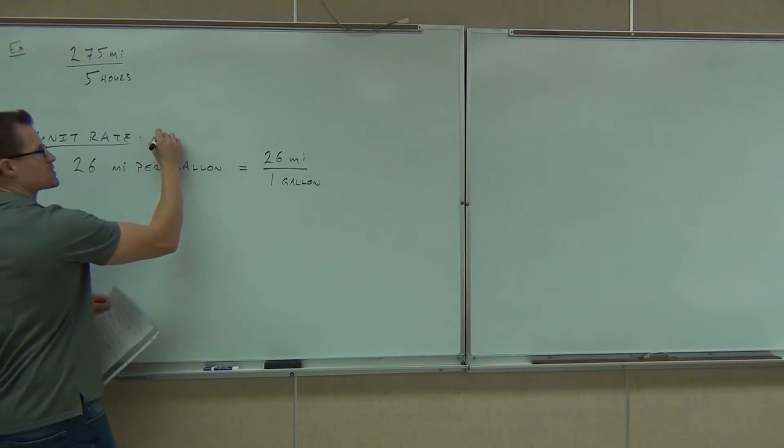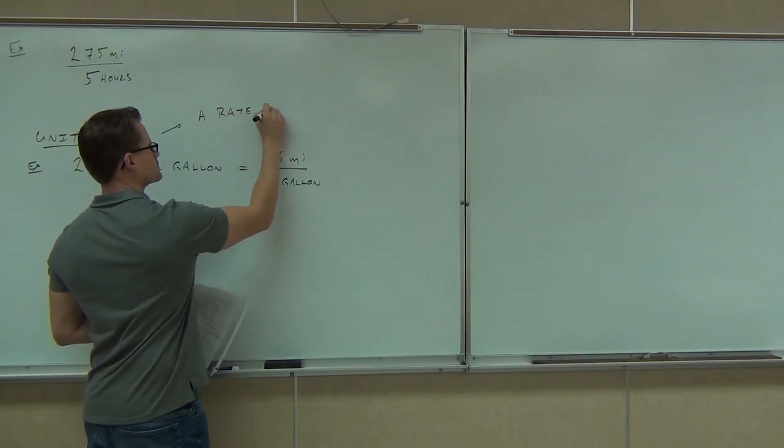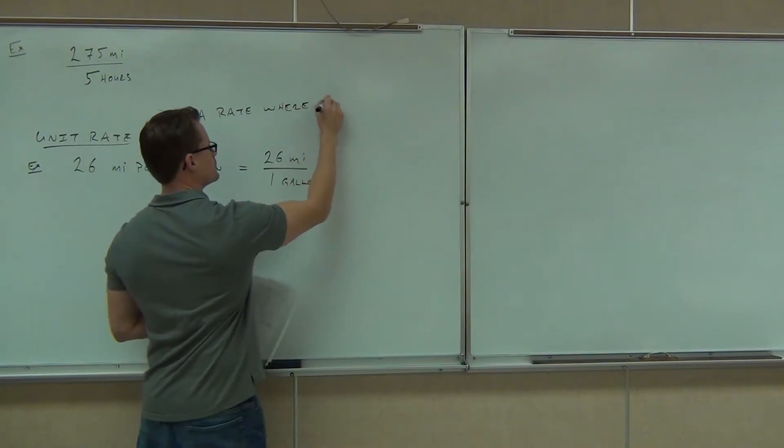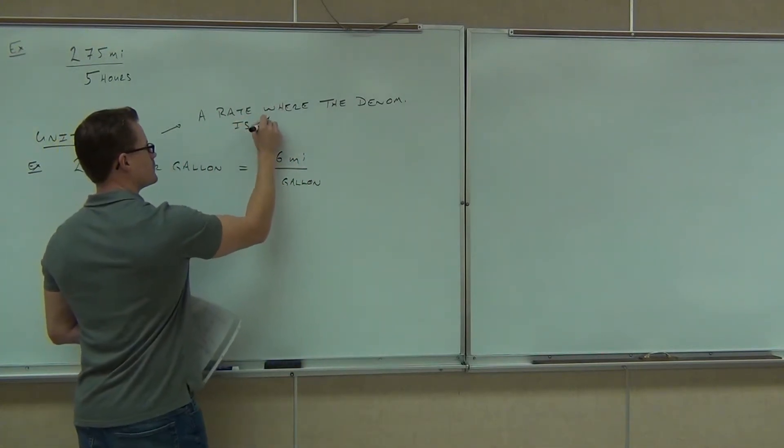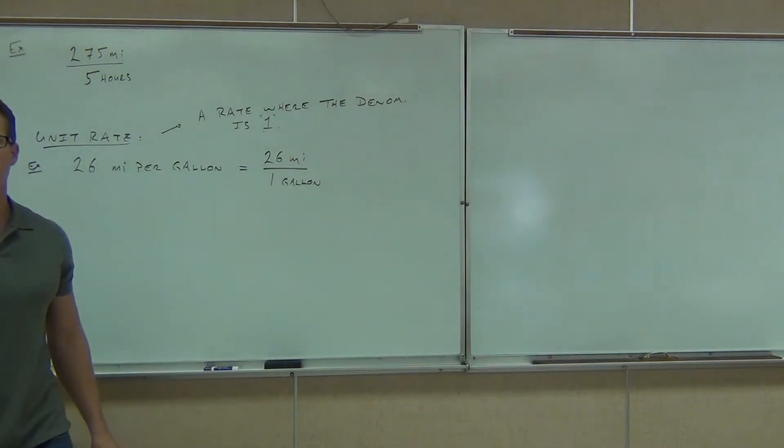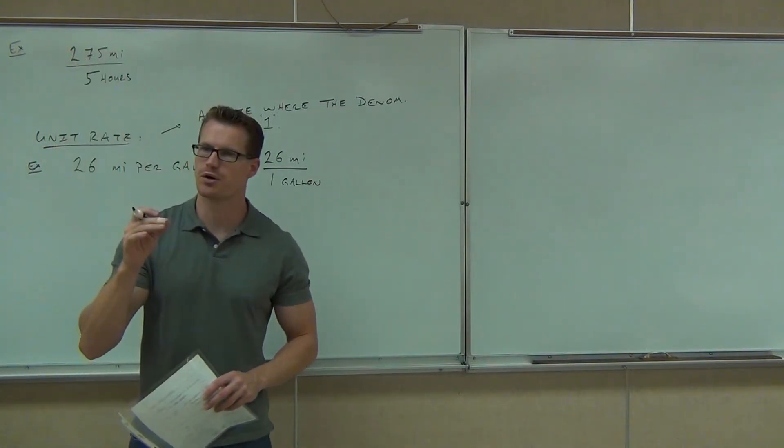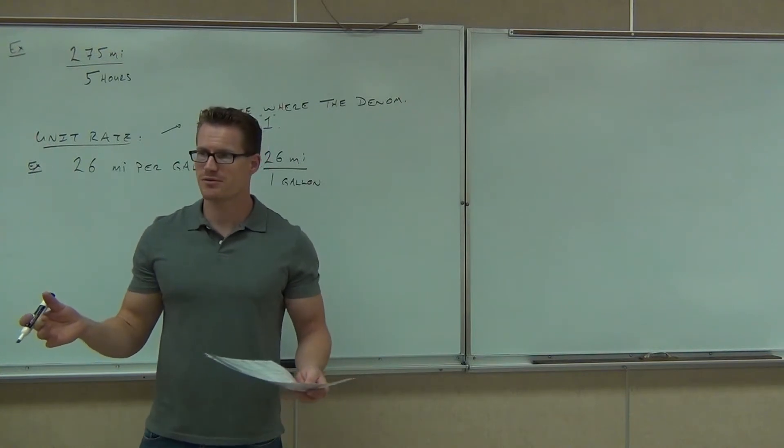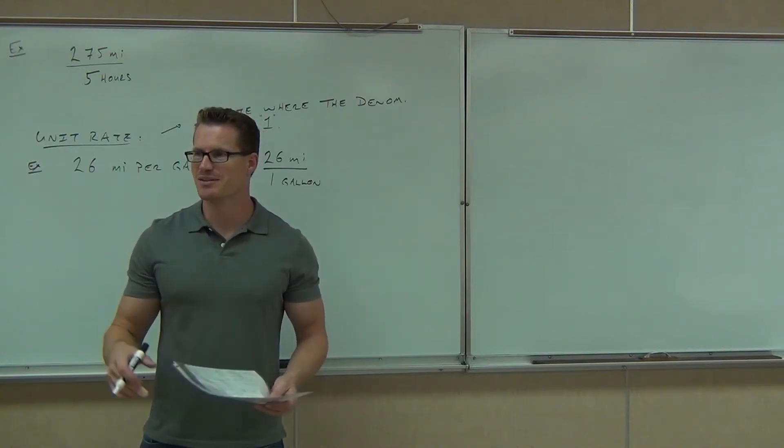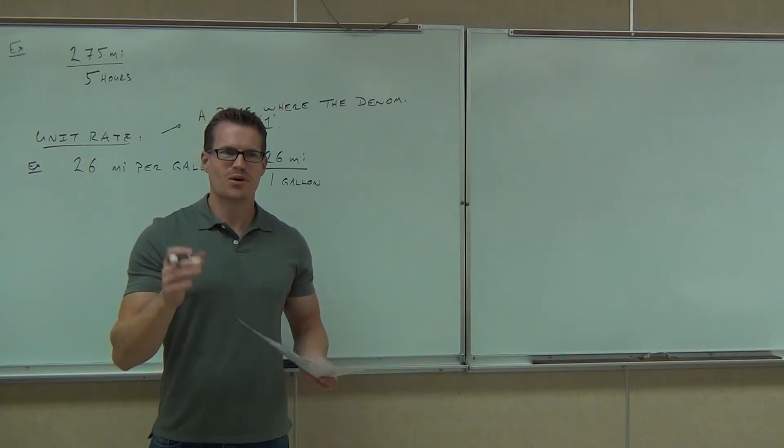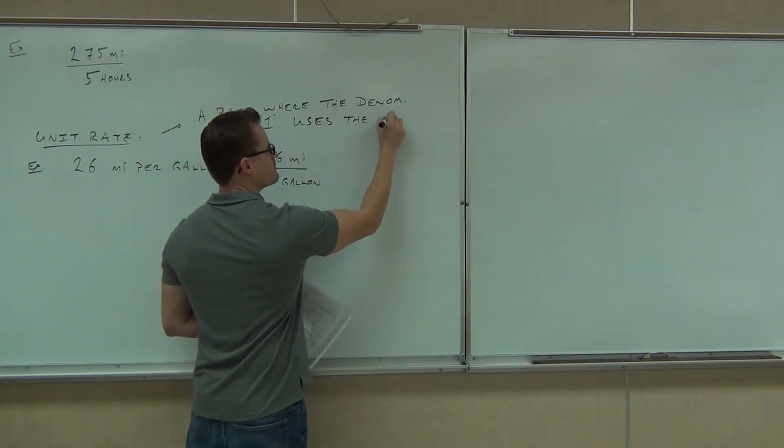So, we reduce it to the point to which we can say the word per, which means over one. So, if we get 26 miles per gallon, that means for every 26 miles, I'm using one gallon of gas. Or in other words, for every one gallon of gas, I get to go 26 miles. This thing right here is a unit rate. So, unit rate, I'll put a little definition up here for you. This is a rate where the denominator is one. A rate where the denominator is one, and you know what? It usually uses that word per. Whenever you see that word per, you say the word per, you are talking about a unit rate.